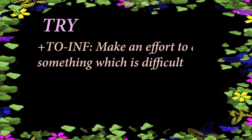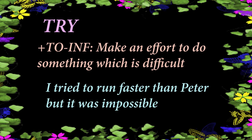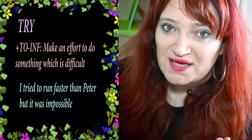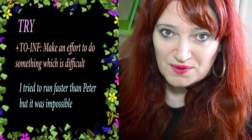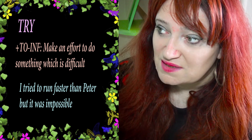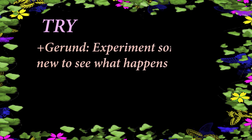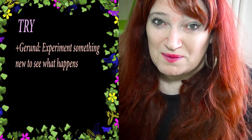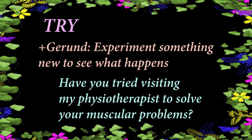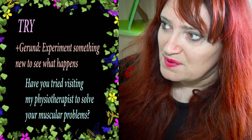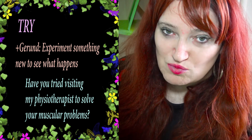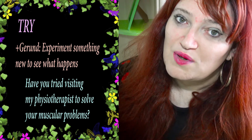'Try' plus to-infinitive is used when you make an effort to do something which is generally difficult, and you usually don't achieve it. For example: 'I tried to run faster than Peter, but it was impossible.' Whereas 'try' plus gerund means to experiment with something new to see what happens. For example: 'Have you tried visiting my physiotherapist to solve your muscular problems?' — implying it's a new thing to try.